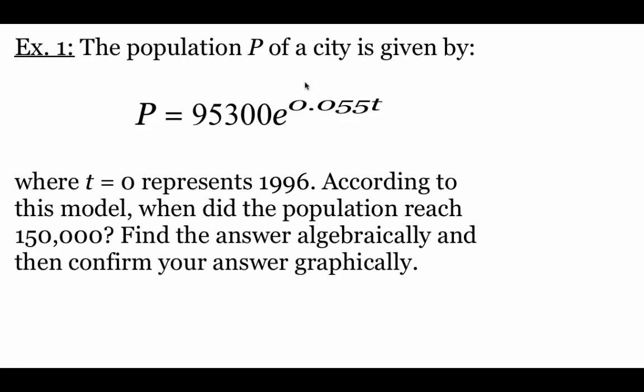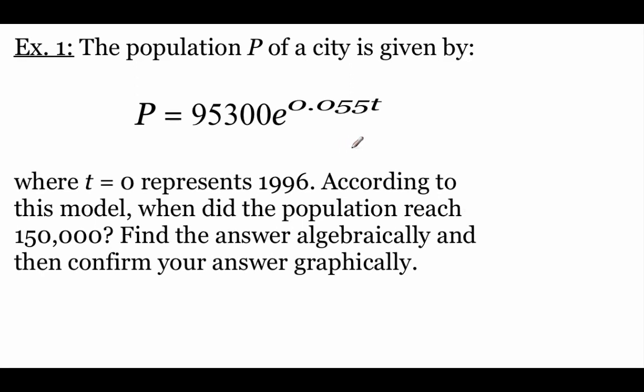So here's the first example we're going to run through. We're given a population model for a city: P equals 95,300 times e raised to the power of 0.055t. And what we want to do with this model is figure out when our population is going to reach 150,000.